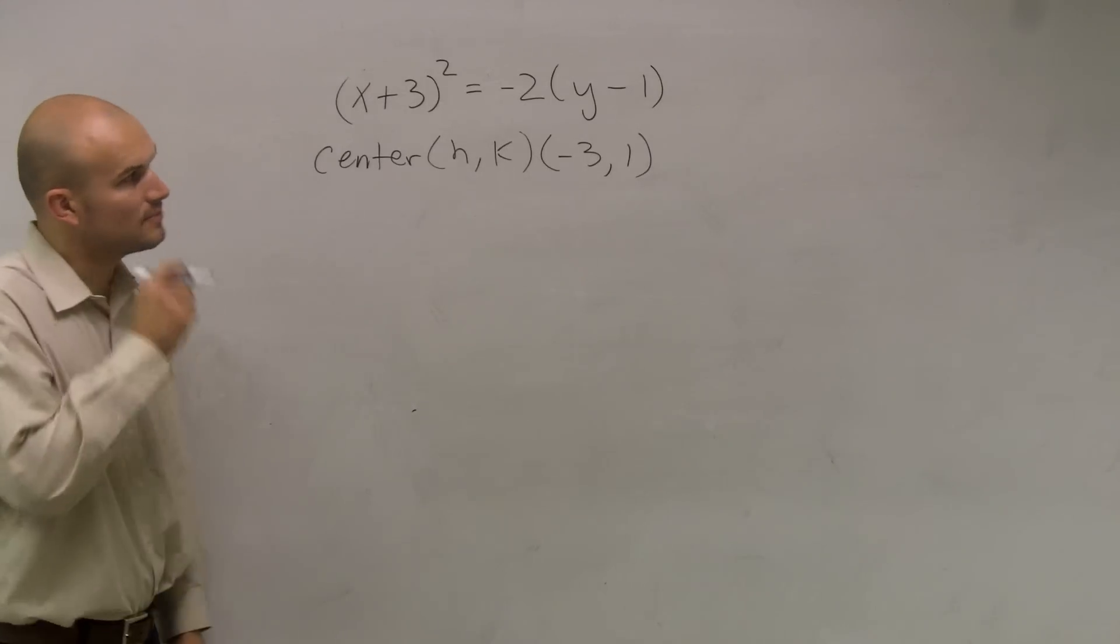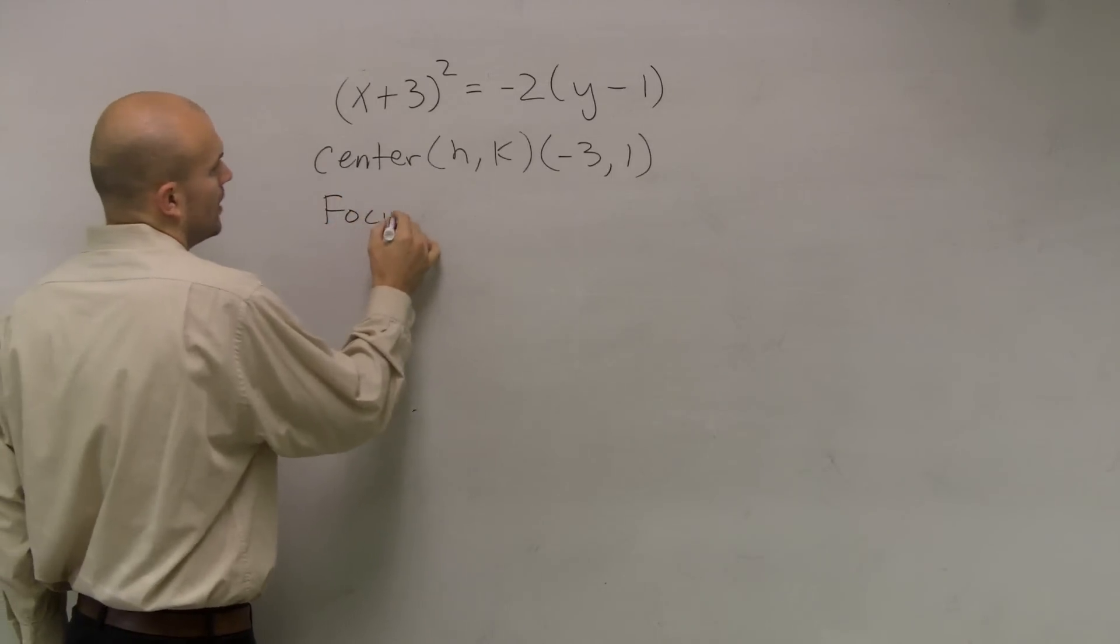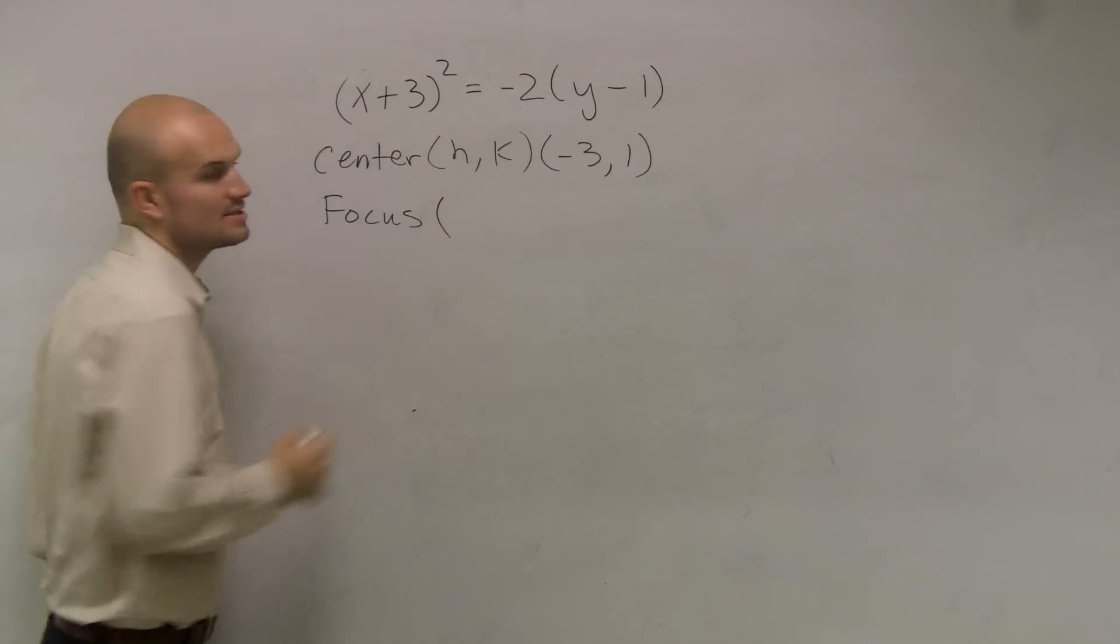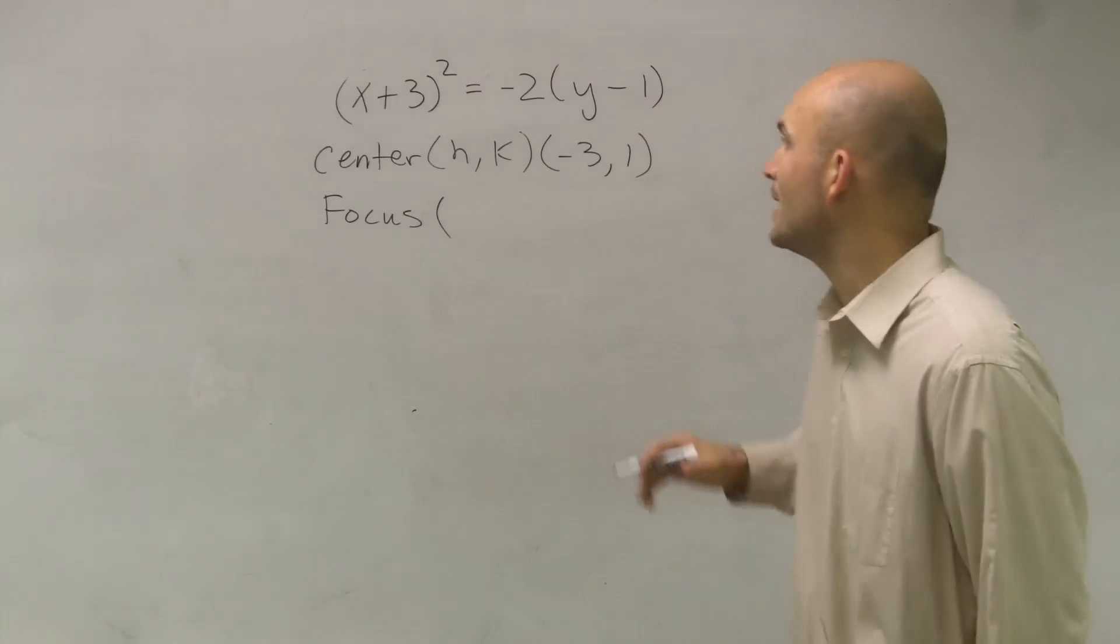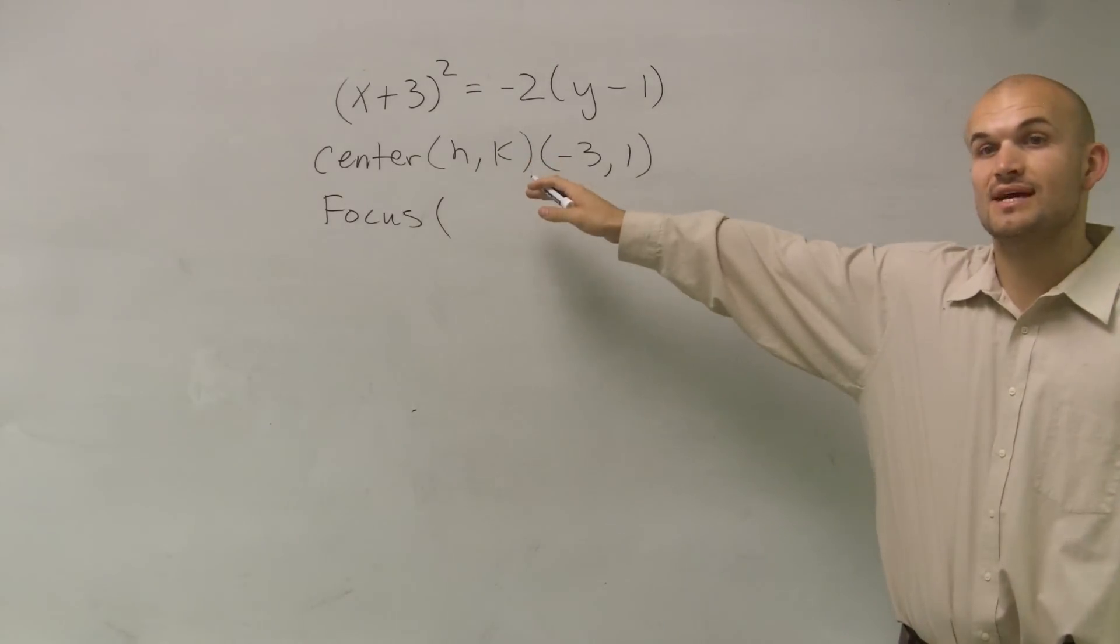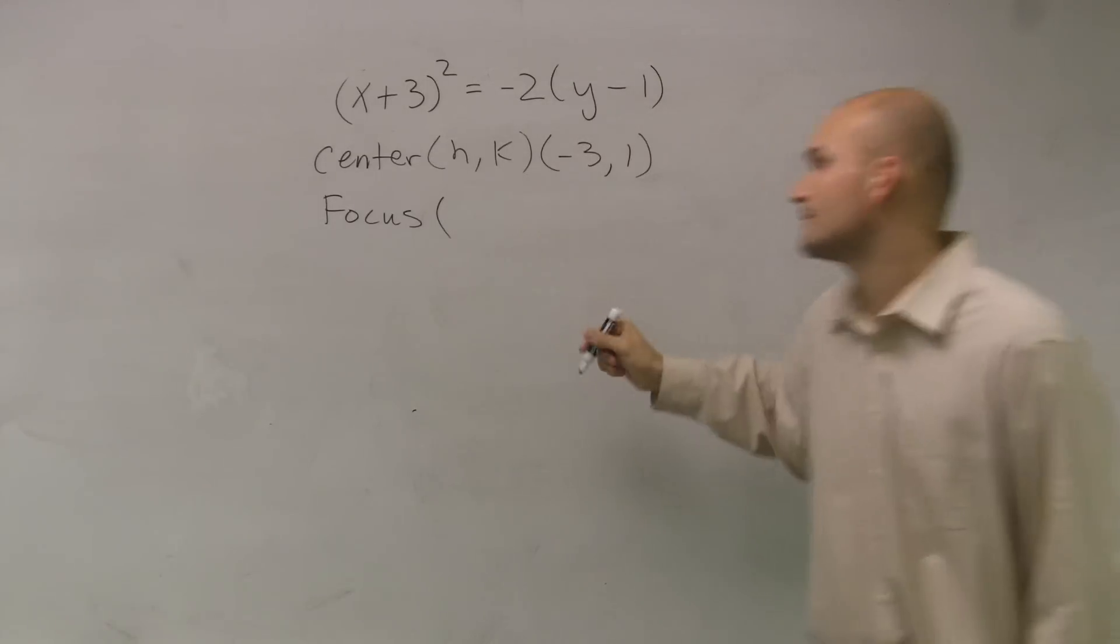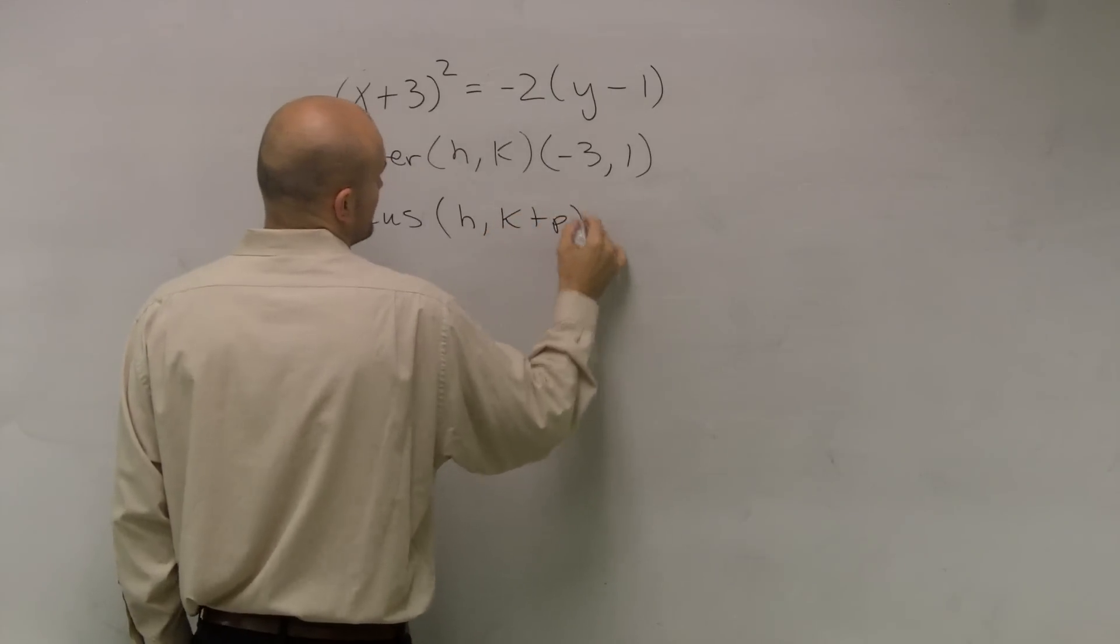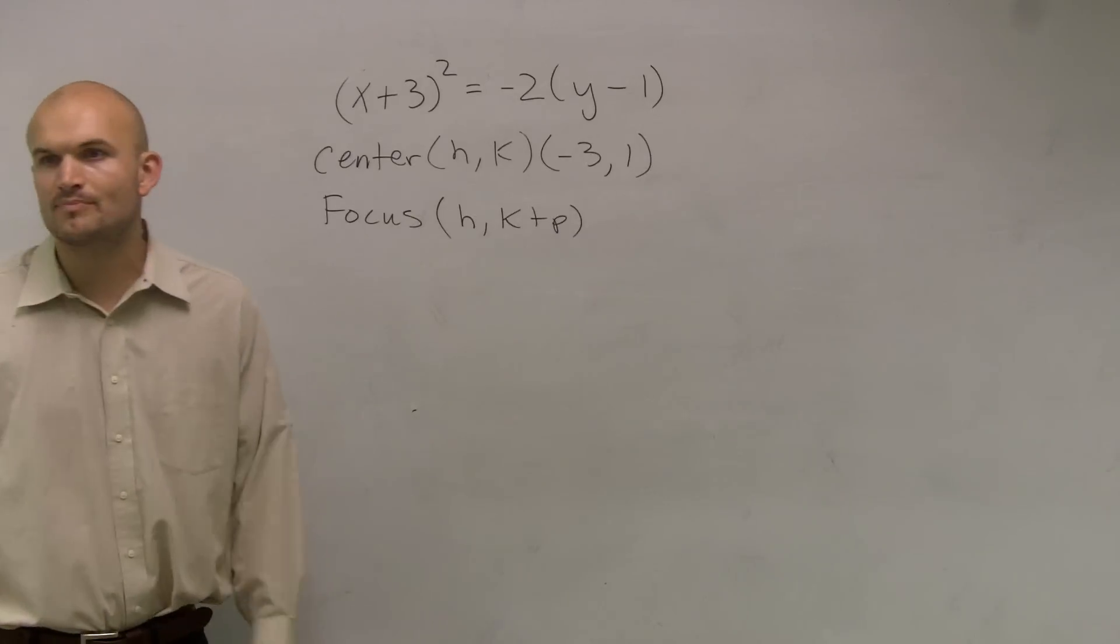The next thing is we need to determine the focus. Well, the focus, if you guys remember, since this is a vertical, I'm going to be adding the focus to my y coordinate of the center. So it's going to be h comma k plus p. So then I just added in this term p.